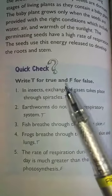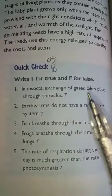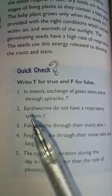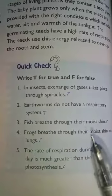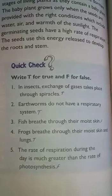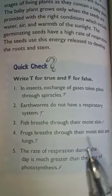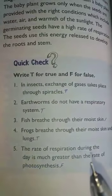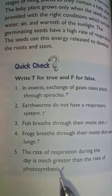True and false: First, in insects, exchange of gases takes place through spiracles — true. Second, earthworms do not have a respiratory system — true. Third, fish breathe through their moist skin — false. Fourth, fish breathe through their gills and lungs — true. Fifth, the rate of respiration during the day is much greater than the rate of photosynthesis — false.